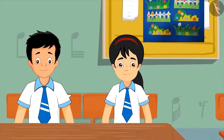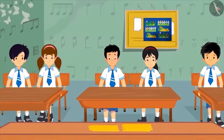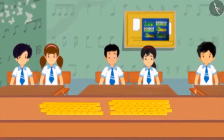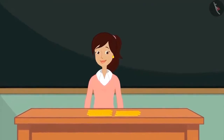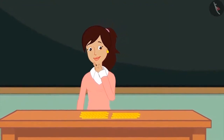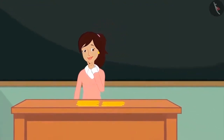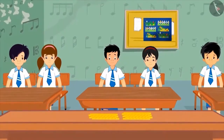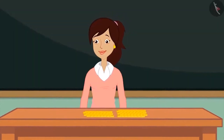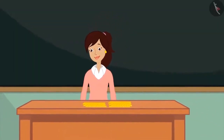Today Pinkie and her friends have their first music class. In the class, many flutes are placed on the table. The teacher has to give a flute to each child, but for this she should know how many children are there in the class — the total number of children. To find out, she makes the children stand in a row and starts counting them one by one.